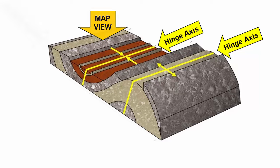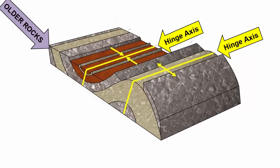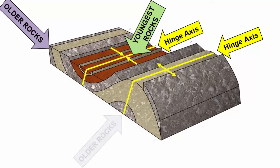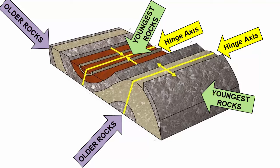Notice that for synclines, the older rocks, the bottom rocks in the original horizontal deposits, appear furthest from the hinge axis and the youngest rocks are in the center. For anticlines, it's the opposite. The oldest rocks are pushed up in the center and the youngest rocks are furthest away.